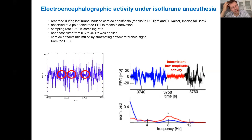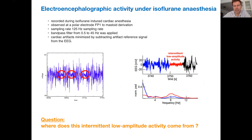So the question is: where does this come from? We found it in several patients under anesthesia. It looks like burst suppression, but it's not burst suppression. We were curious — where does this intermittent lower amplitude activity come from?